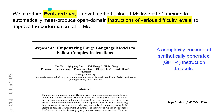Here we have EvolveInstruct - a novel method using LLMs instead of humans to automatically mass-produce open-domain instructions of various difficulty levels. In my words: we have a complexity cascade of synthetically generated datasets. GPT-4 creates the datasets for us in a specific form - the evolved instruction dataset.